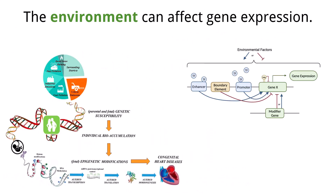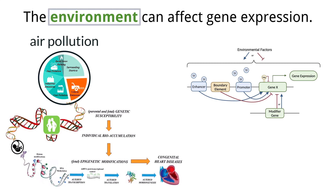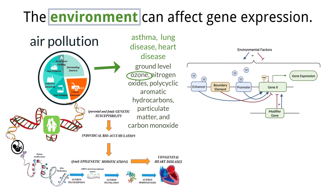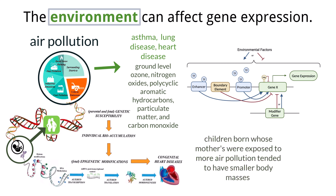Epigenetic tags can be impacted by where we live and the chemicals in our environment. Air pollution is one example that affects the health of people living in that environment, leading to health issues such as asthma, lung disease, and heart disease. These include ground-level ozone, nitrogen oxide, polycyclic aromatic hydrocarbons, and particulate matter and carbon monoxide. Studies examining DNA methylation patterns in white blood cells, brain cells, and other genes that play important roles in the immune system have shown different methylation patterns in the genes of children, depending on whether their mother was exposed to high or low amounts of air pollution. There was also a difference in methylation patterns of DNA that controls the formation of the placenta in females who lived close to major roads. Children born to females exposed to higher levels of air pollution tend to have a lower body mass, and cells of developing fetuses are more susceptible to modification.